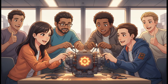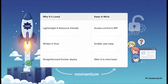First up, we've got a project that's become the surprise darling of this whole migration wave: Garage. It's a distributed object storage solution written in Rust, and it's getting a ton of positive buzz from former MinIO users. It's praised for being super lightweight on resources, easy to get up and running, and it has really solid performance. It's a great fit if you value simplicity and efficiency. It is still a younger project, so its user base is smaller and some features are still maturing, but its momentum is undeniable.